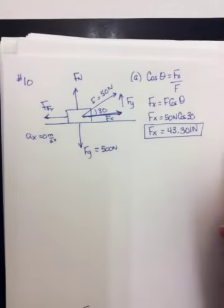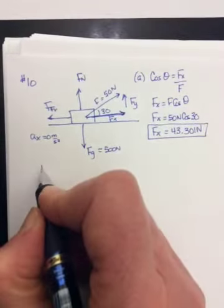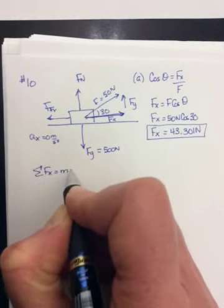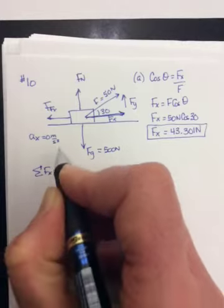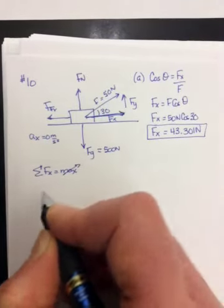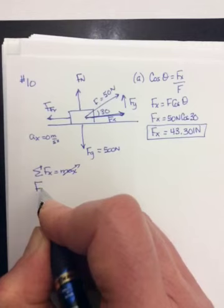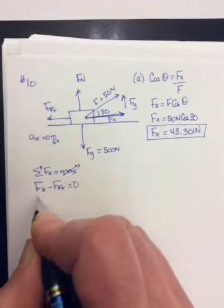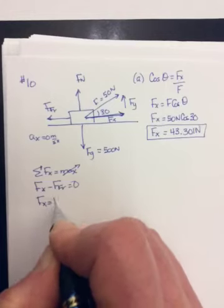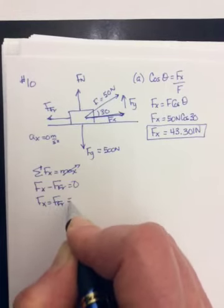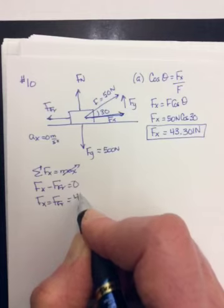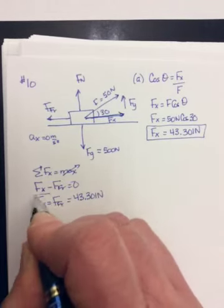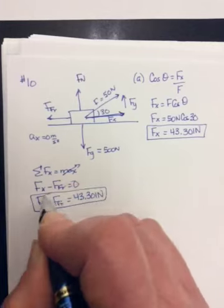Part B says, what is the force of friction that opposes this motion? So the force of friction that opposes this motion, we can get if we do sum of the forces in the x direction. It says constant speed, so Max is 0, so it'll be Fx minus friction equals 0. So the force of friction is just going to be equal to the Fx component, in other words, 43.301 newtons. That is part B.